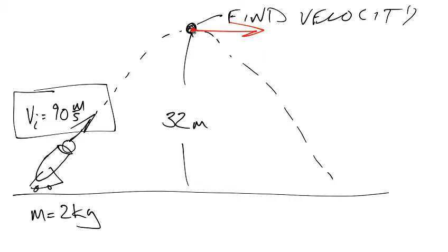Because at the highest point, the vertical velocity is going to be zero. And therefore, all the velocity is going to be towards the right.